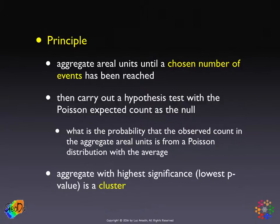The rationale is based on the probability of that many events occurring given the sample population for the area under the equal risk assumption. The equal risk assumption is estimated by adding up all the events, adding up all the populations, and taking the ratio. With that you can compute, for anything, what is the probability that so many counts will happen. If that probability is too low — especially on the high end, if there are too many events — you call it a cluster.